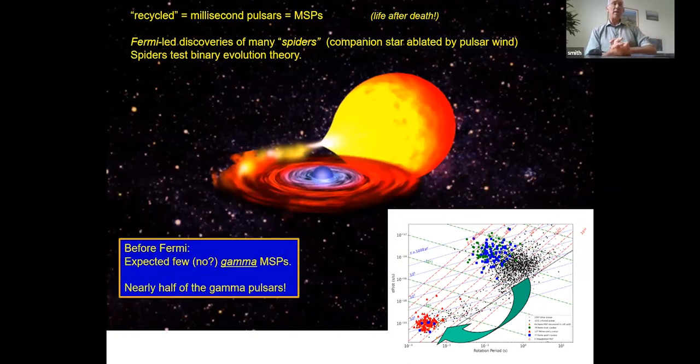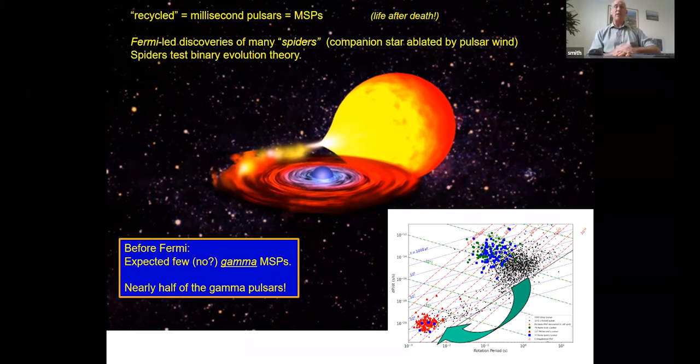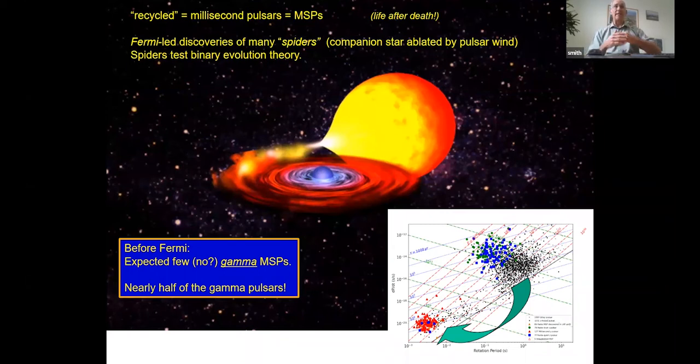Before Fermi, there were some predictions of gamma rays from millisecond pulsars. There was even a detection of one of them with data from EGRET on the Compton Gamma Ray Observatory. But most people thought it would be anecdotal, marginal, not much. And one of the big surprises with Fermi is that it's turned out to be half. Half of our gamma ray pulsars, roughly, are millisecond pulsars. And everything I'm going to tell you today about getting the timing right, accurate timing, it's all more so for millisecond pulsars. Everything has to be that much more careful and precise.